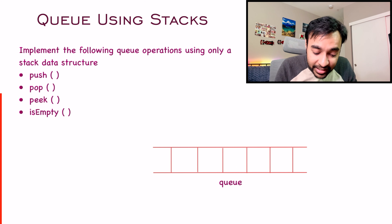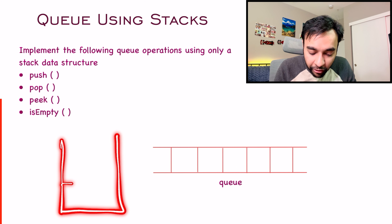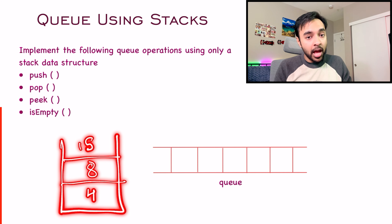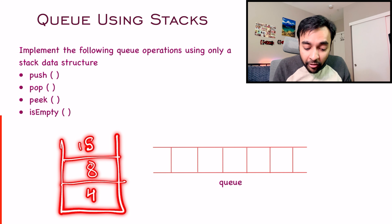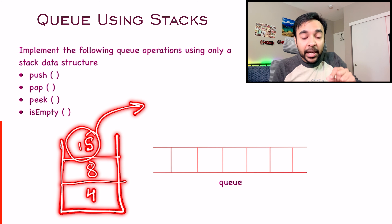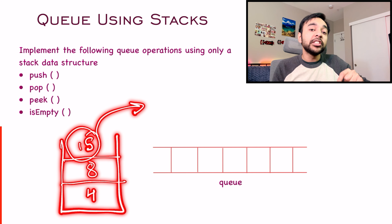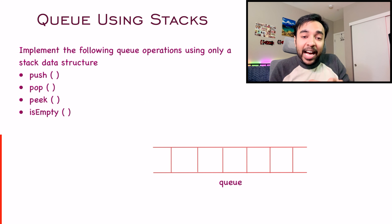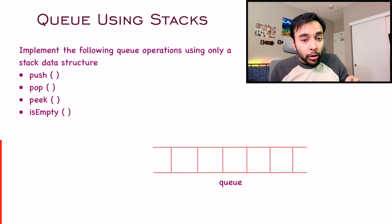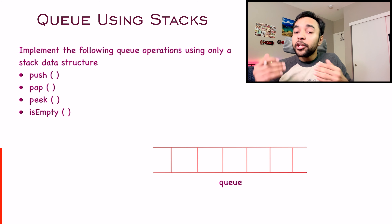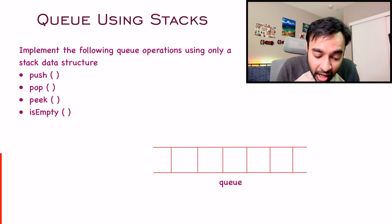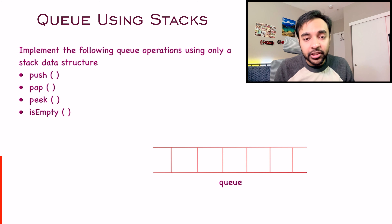Whereas in a stack data structure, if you enter 4, then 8, and then 15 — if you have to pop out elements, 15 will go out first, because a stack works on the principle of last in first out. That is where the challenge is. So using a last in first out structure, you have to somehow implement a first in first out structure.